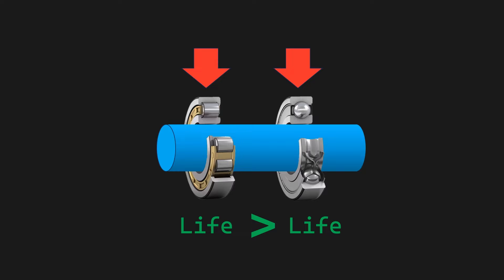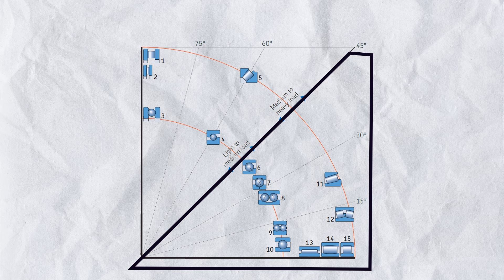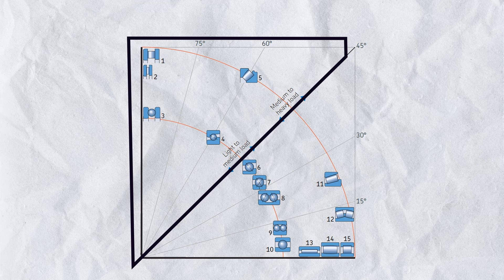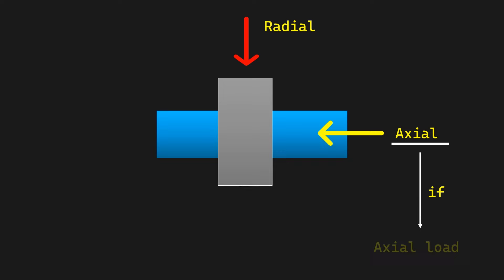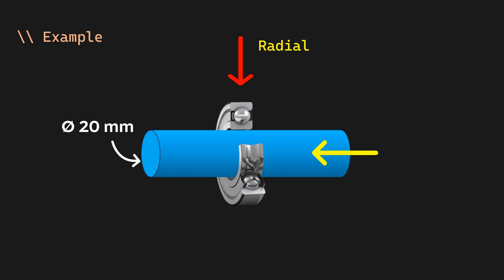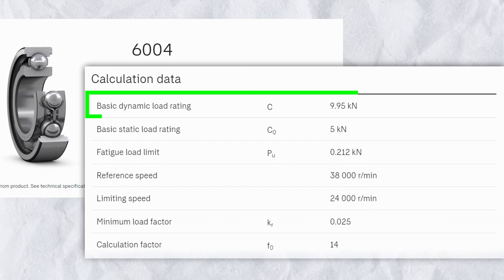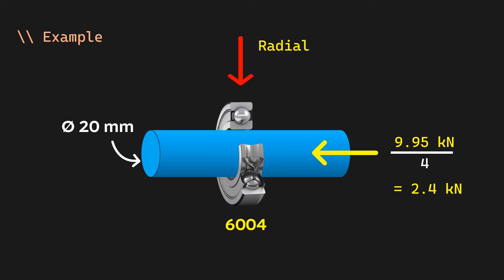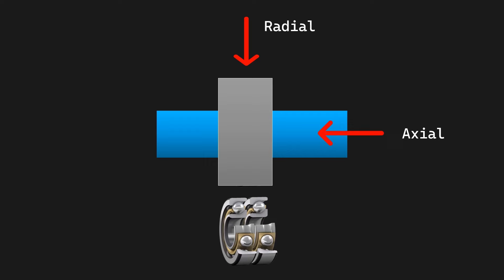The second key point is that all bearings with a contact angle less than 45 degrees can be used for pure radial load, and all bearings with a contact angle larger than 45 degrees can be used for pure thrust load. The third key point is for combination of load: if axial loading is small — just a fraction of radial load, less than one-fourth of the bearing's basic dynamic load rating — we can use a deep groove ball bearing. For example, for shaft diameter 20 mm, deep groove ball bearing 6004 can be used if the axial load is less than one-fourth of 9.95 kN, which is less than 2.4 kN. But for a large axial load component, we should use pairs of universal matched angular contact bearings, or a matched set of taper roller bearings, or double row angular contact bearings.